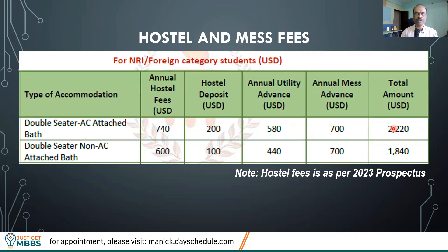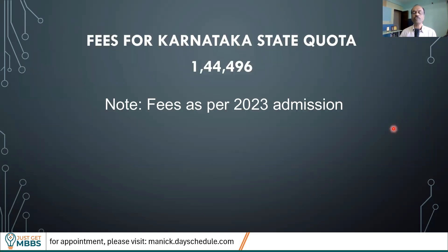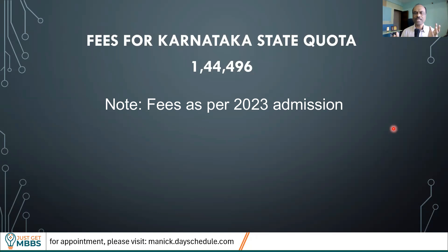For Karnataka state quota, the fees is about 1.45 lakhs per year based on the KEA website from last year — it's a government quota seat, which is why the fees is much less compared to All India categories. These seats and this fee structure apply only to Karnataka students. If you are a Karnataka student, budget roughly around 2 lakhs per year including hostel and possible other charges.